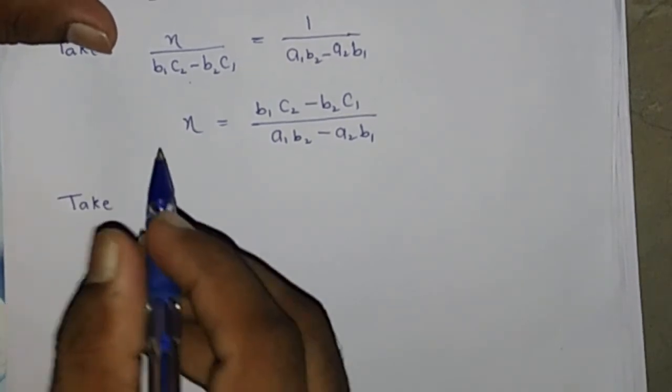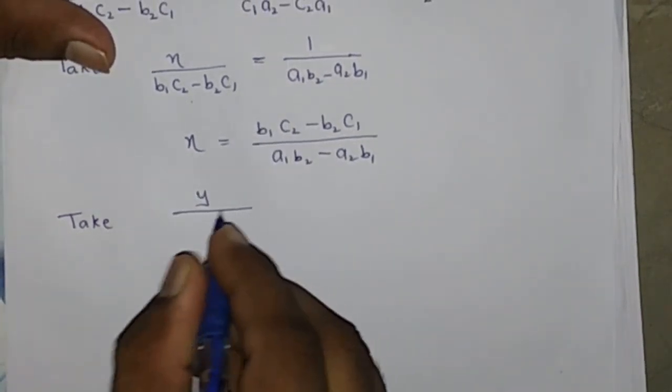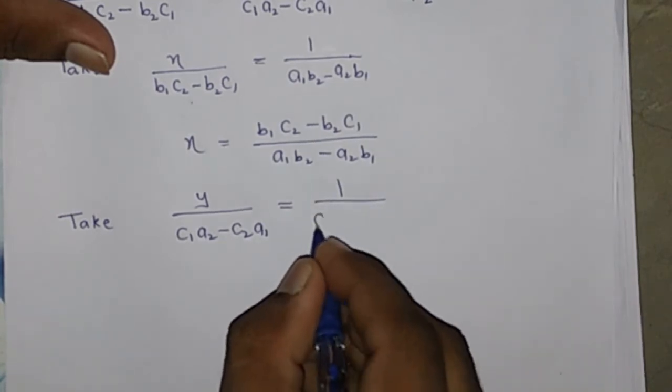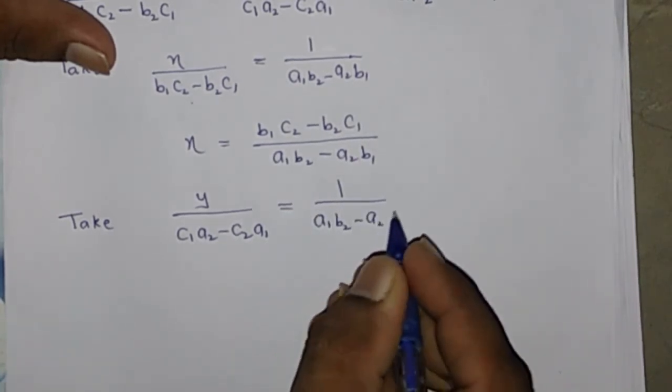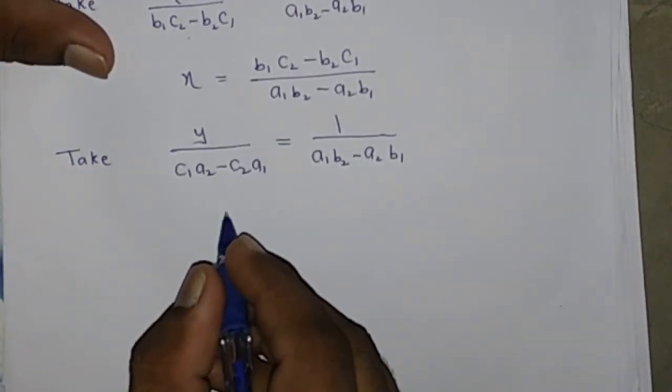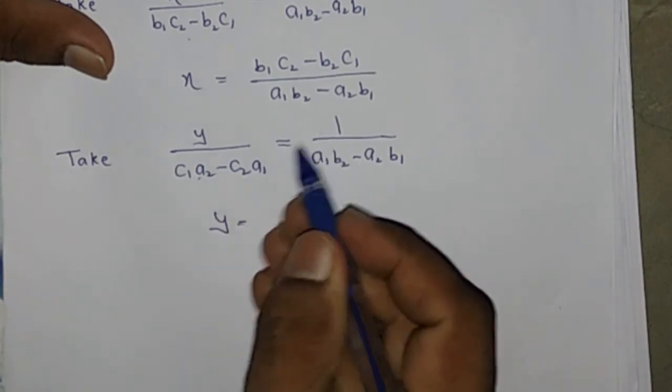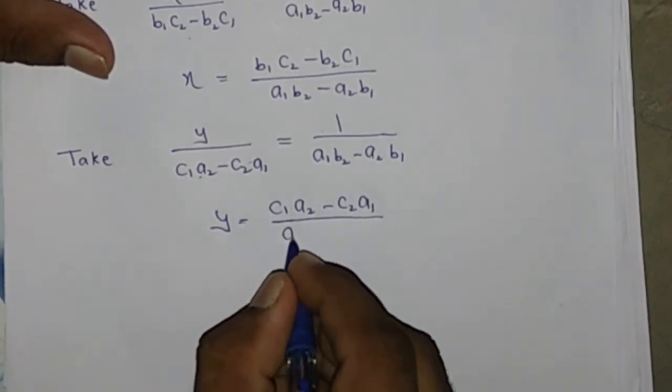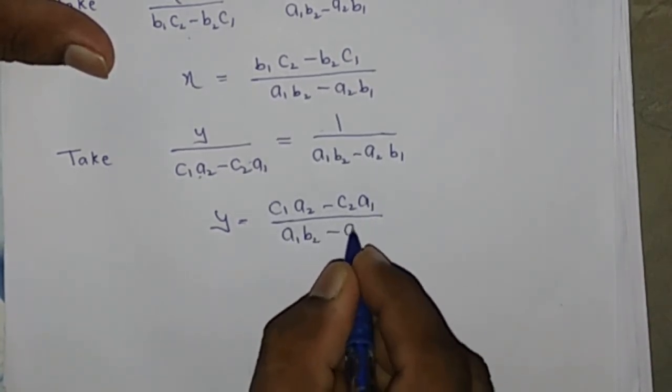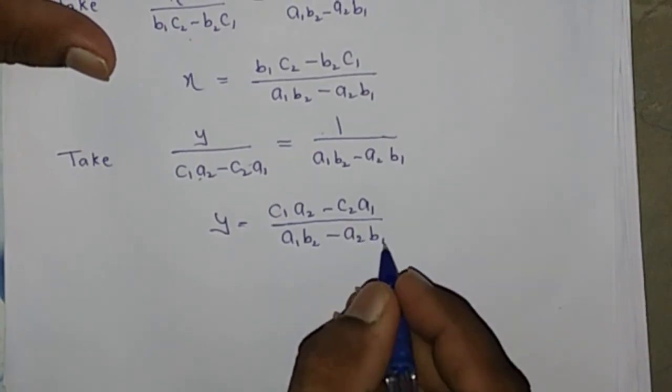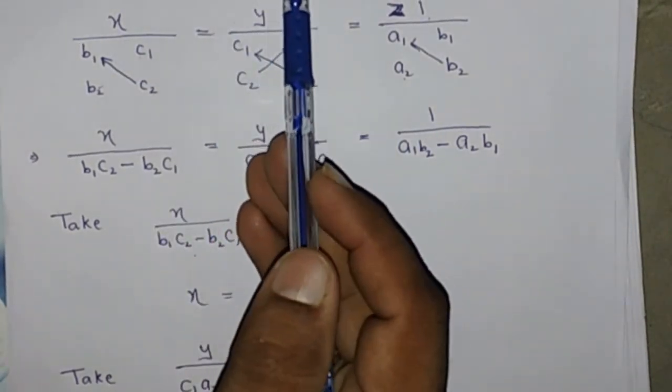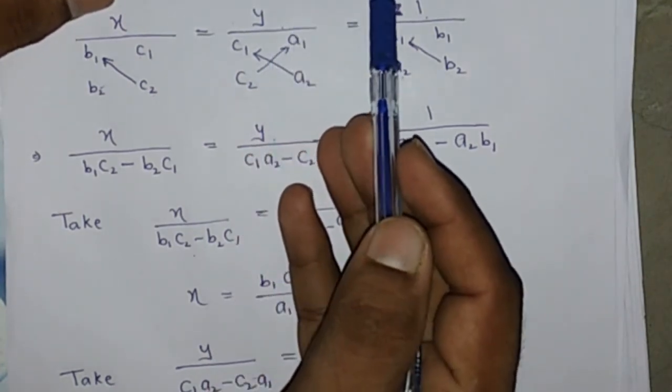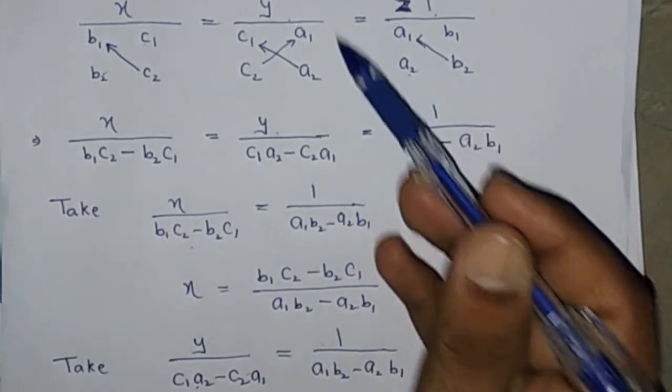Now take y by C1 A2 minus A2 B1. This is the value of x and y. First we shift the given equation in this form means RHS of this term is 0, and then solve this equation by this method.